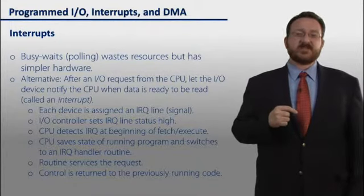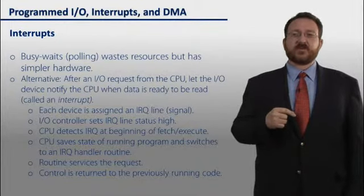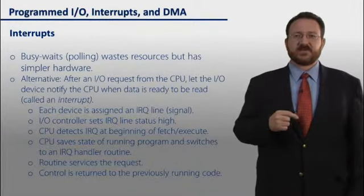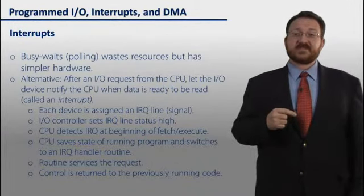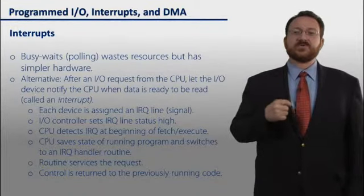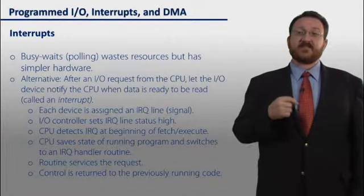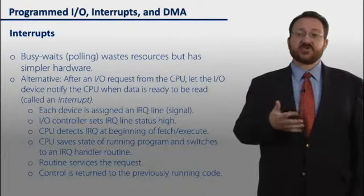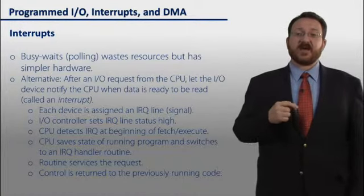So the way this works is that each device is assigned an individual interrupt request line. This is just a signal that we would assert. And the IO controller sets the IRQ line status high when the data is ready. So the CPU will detect that the IRQ is high at the beginning of the fetch execute cycle.